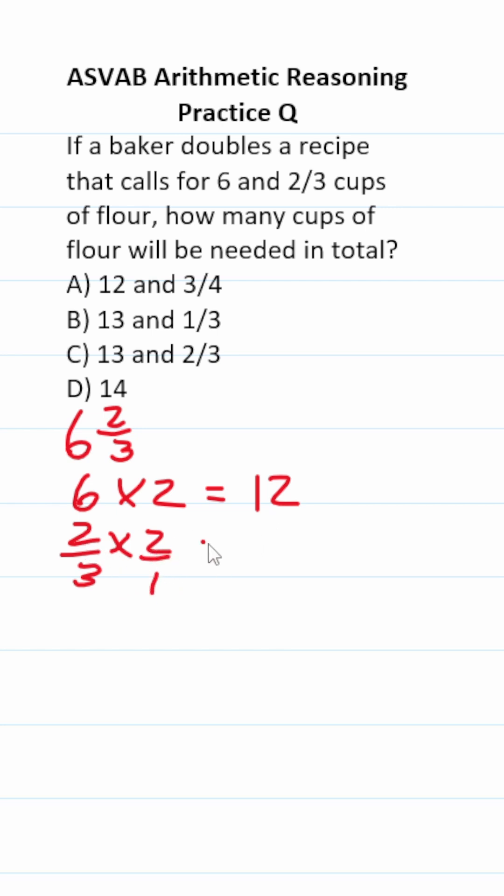just place this over one. Two times two is four. Three times one is three. Four over three is one and one-third.